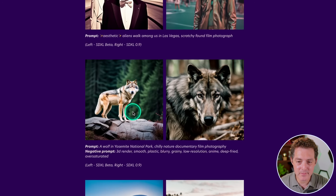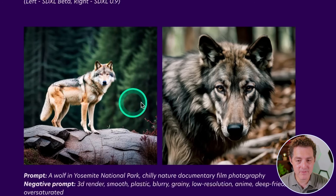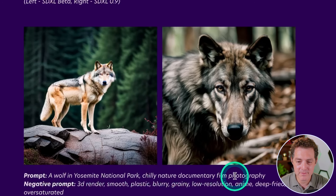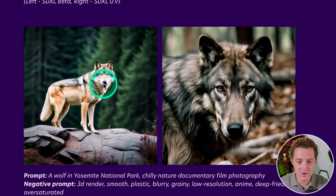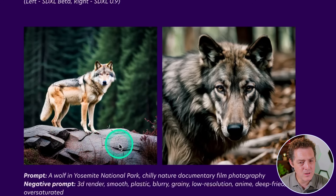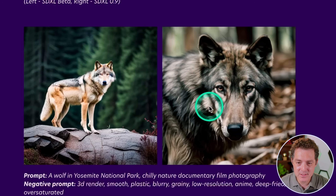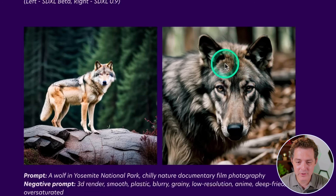The second image: a wolf in Yosemite National Park, Chile Nature Documentary Film Photography. The beta version — the wolf is far away, details are not great, the log doesn't look super real. But the new version is fantastic, gorgeous. You can see all the little hairs, the details are phenomenal, the eyes look perfect. This is a really great image.